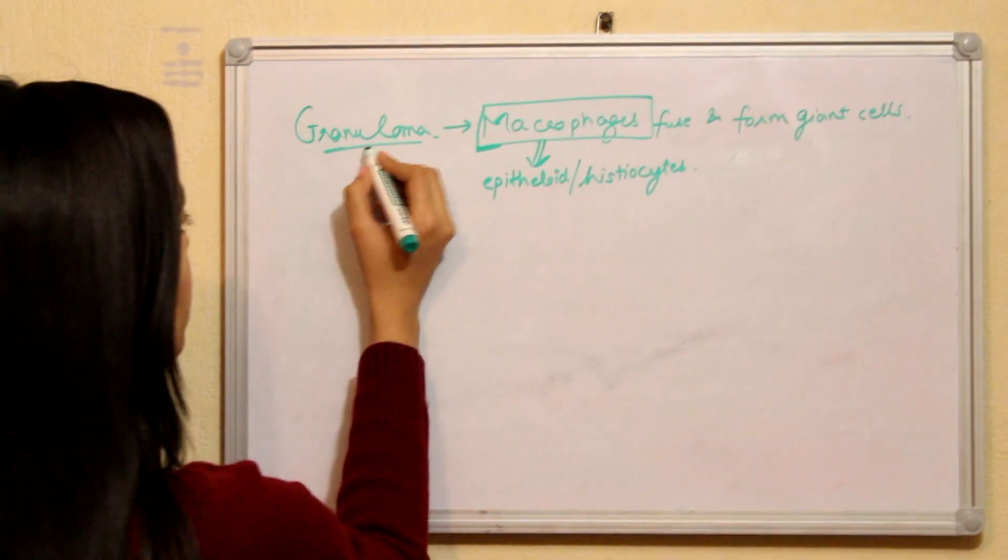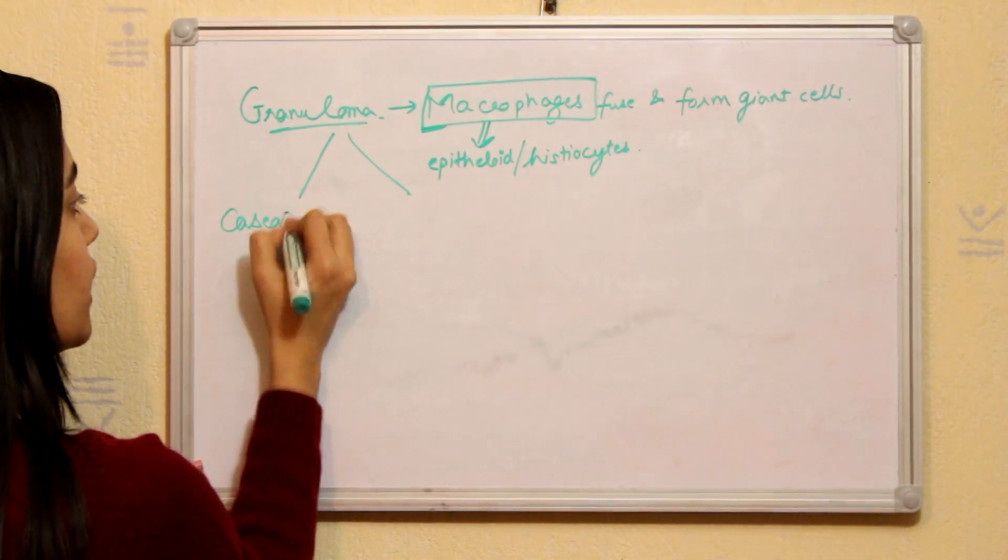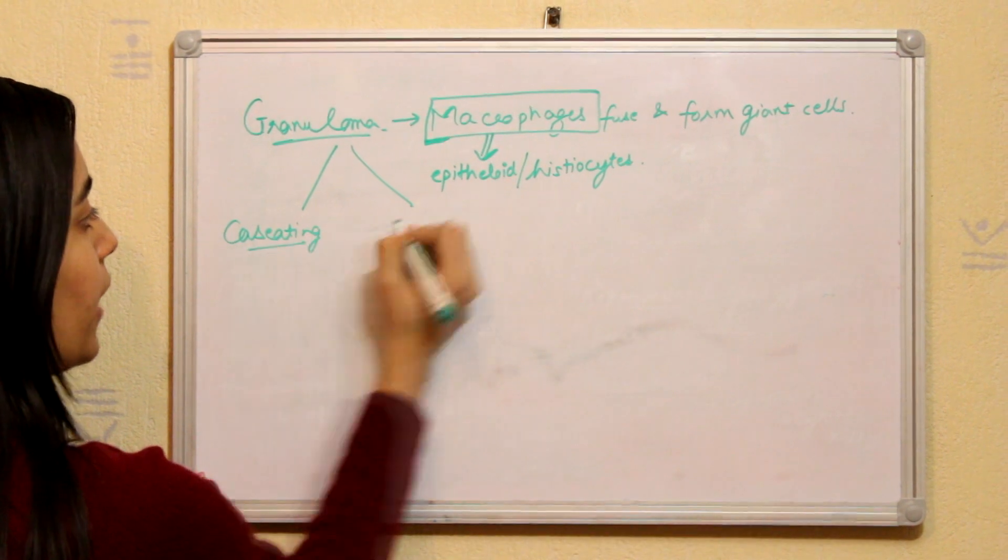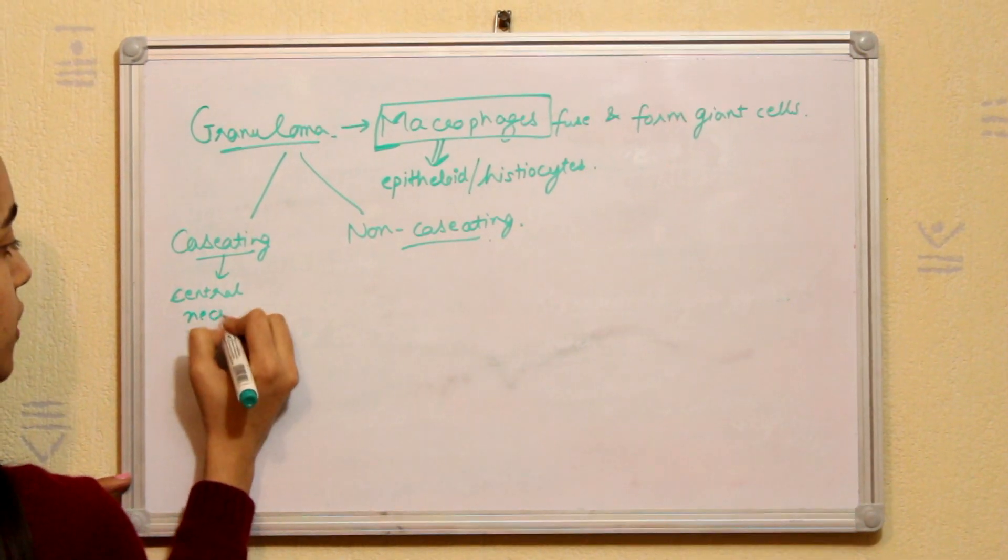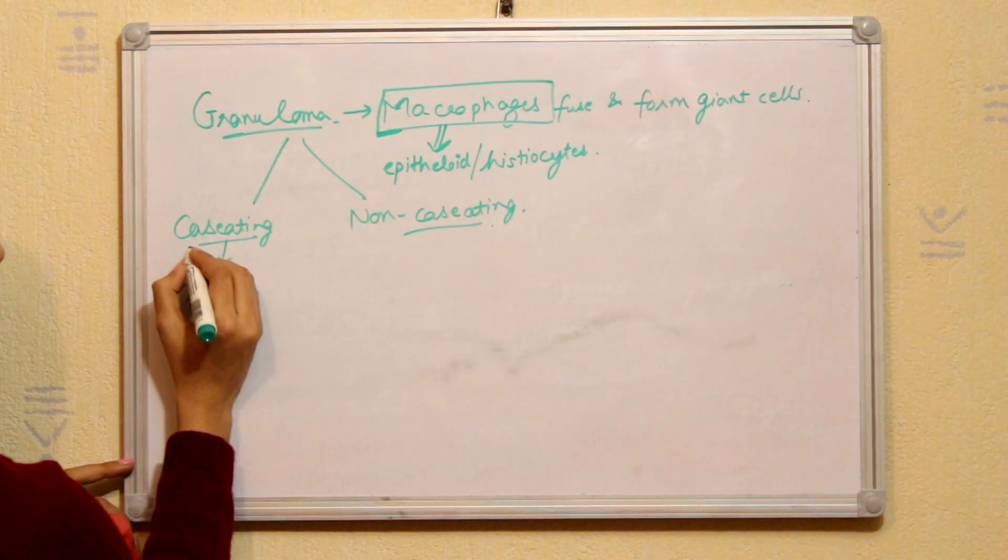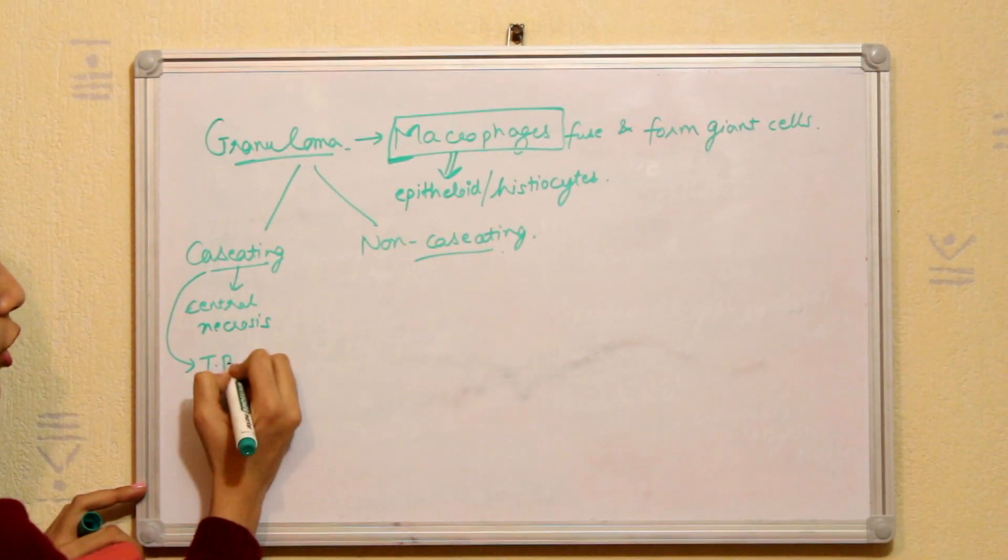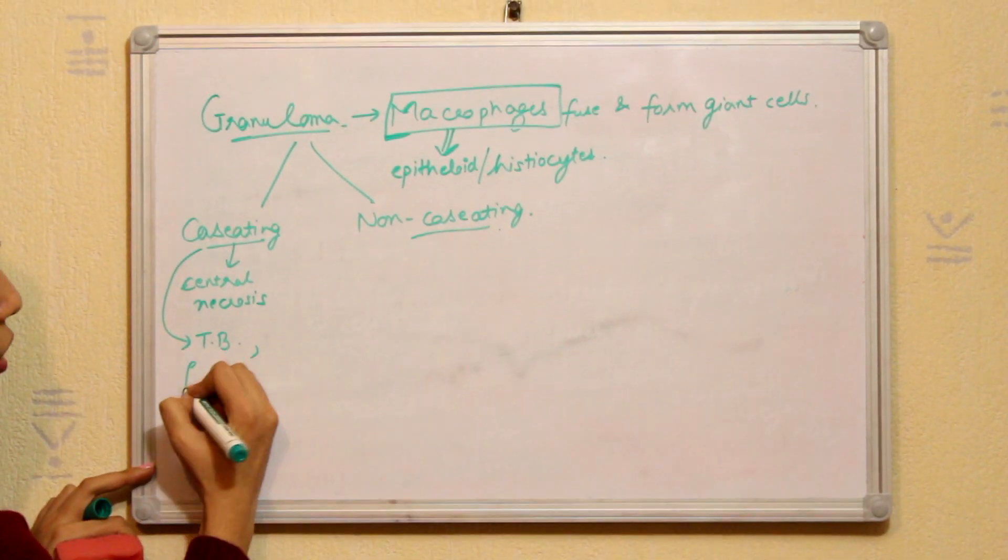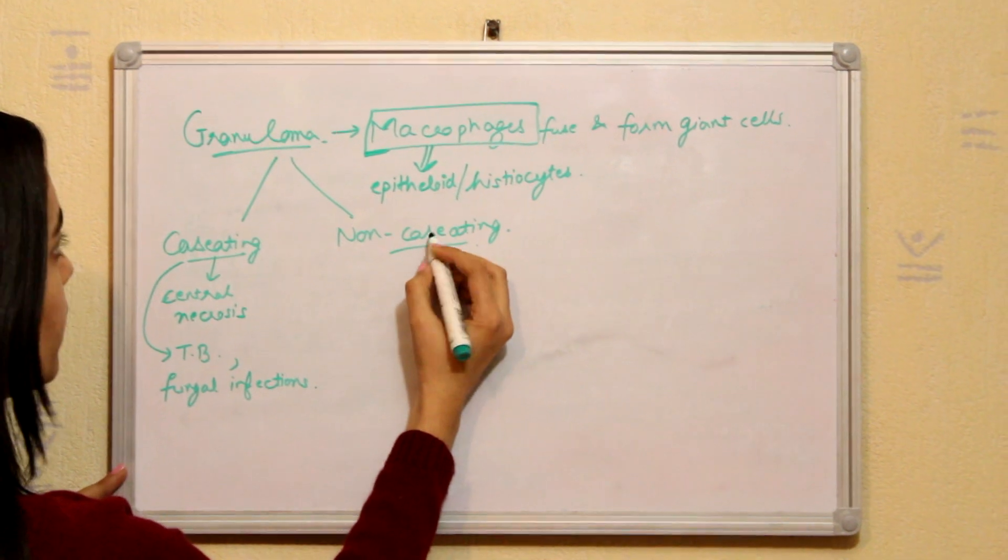So there are two types of granulomas: caseating and non-caseating. Caseating has central necrosis and it is typical for inflammation in tuberculosis or fungal infections.